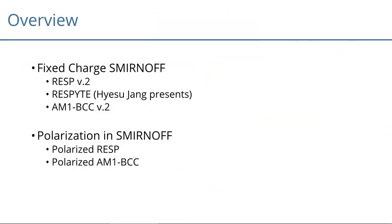In this talk I'll first cover fixed charge models in Smirnoff and our plans for implementing new fixed charge models — specifically our short-term goal, a new version of RESP called RESP2. Afterwards, Sue from Li-Ping's lab will briefly introduce the RESPite program. Then I'll continue on how we want to come up with a new generation of AM1 BCCs, and in the second part I'll talk about polarizable charge models.